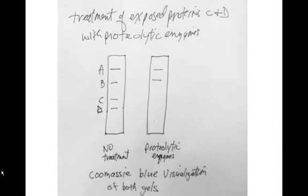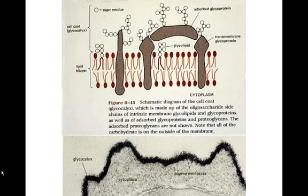If you stain both of those with Coomassie Blue, you would only see the proteins A and B because they were not treated with the proteolytic enzyme. C and D were, and they are no longer in the gel.